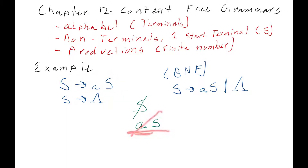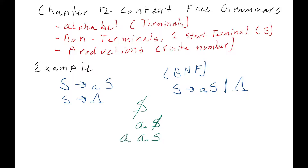This is not yet a word in the language because it still has a non-terminal inside of it. In order to generate a word, all the capital letters have to disappear. So we keep replacing: replace this S with another AS, bring down the A that's already there, and this generates the new AS. We could keep replacing that again — replace it one more time, replacing this S with that production, then bring down those two letters.